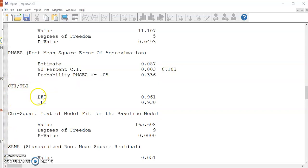CFI has a possible range from 0 to 1. We want a value to be greater than 0.95 for good model fit. Here, the value for this model is 0.96. Okay, another good fit index.